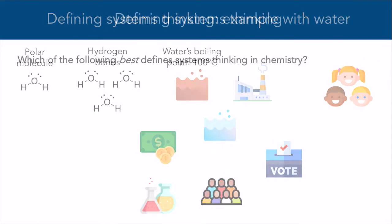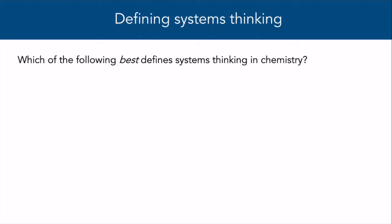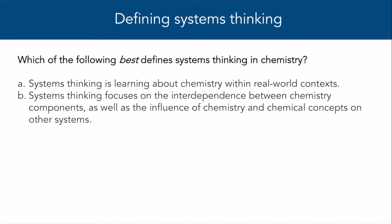But first, let's make sure we're on the same page so far. Which of the following best defines systems thinking in chemistry? A. Systems thinking is learning about chemistry within real-world contexts. B. Systems thinking focuses on the interdependence between chemistry components, as well as the influence of chemistry and chemical concepts on other systems. C. Systems thinking is a way of thinking about chemistry systematically.